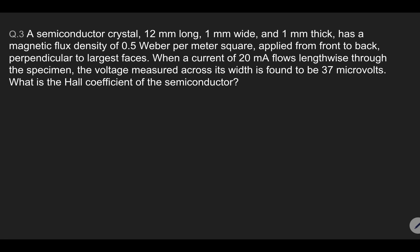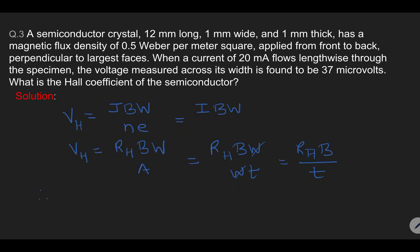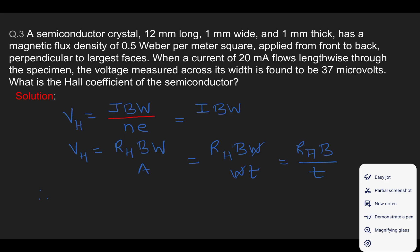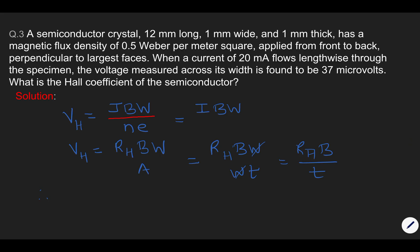Let us see question number 3, where we are given the Hall voltage and need to calculate the Hall coefficient. The formula we are going to use is: Hall voltage equals current density times magnetic field B, divided by N into E.